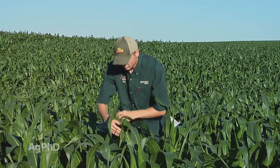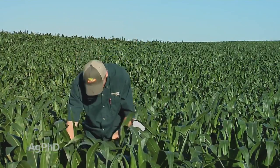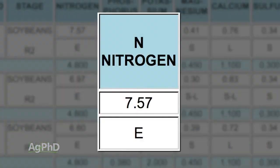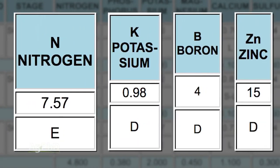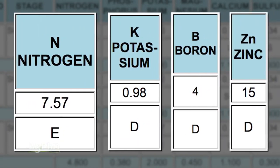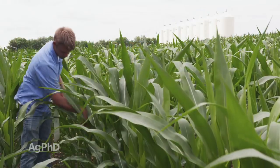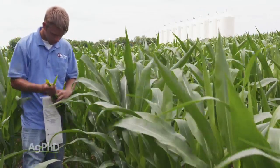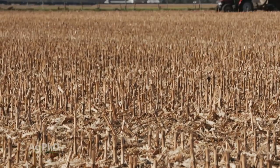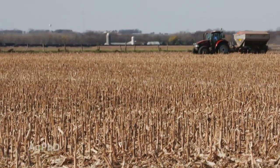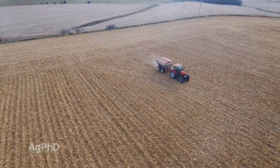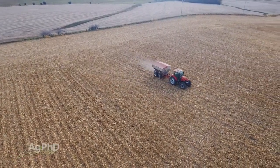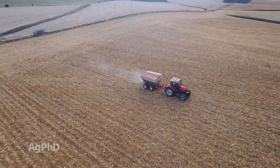On our farm, when we first started doing plant tissue analysis, we were ridiculously high on nitrogen and ridiculously low on potassium, boron, and zinc. You don't have to be that smart to figure out that if you've got all this data showing you're crazy low on three nutrients, you need to put more dollars there. And if you're crazy high on one nutrient, you should probably pull back on that one and start to refine your program.